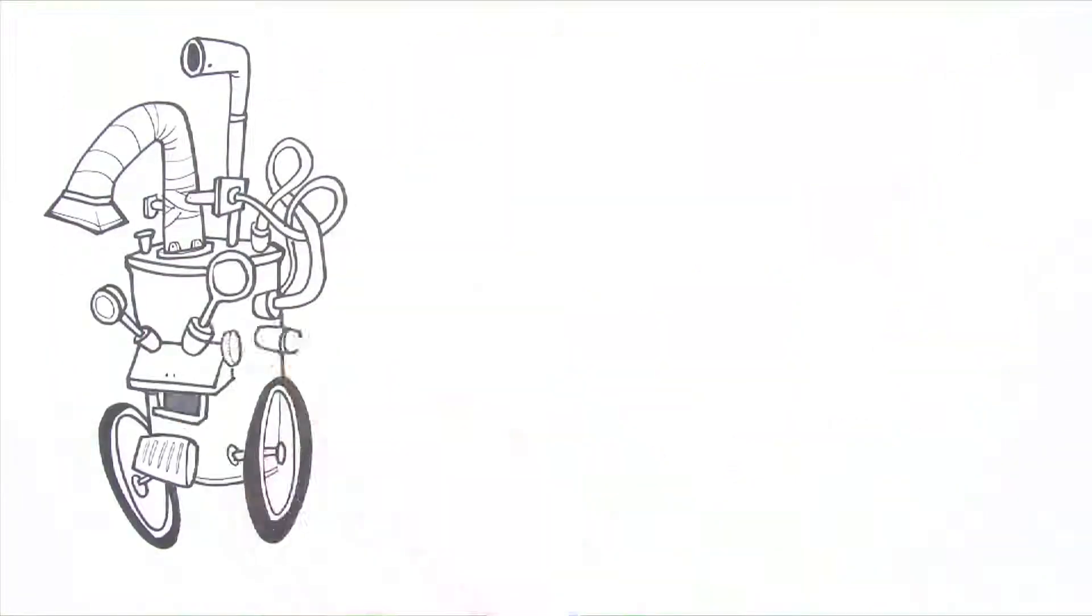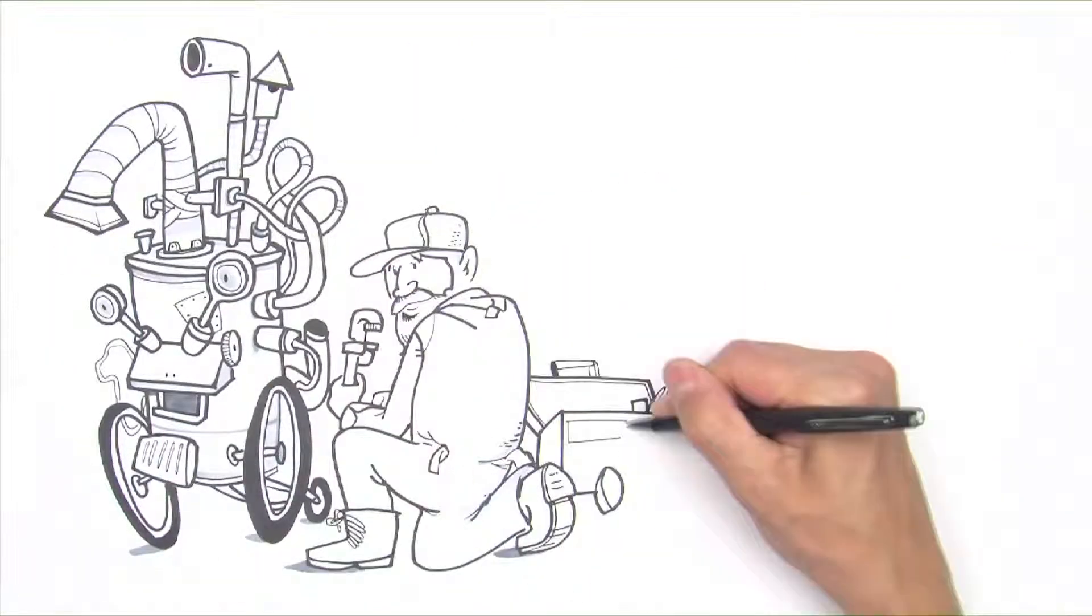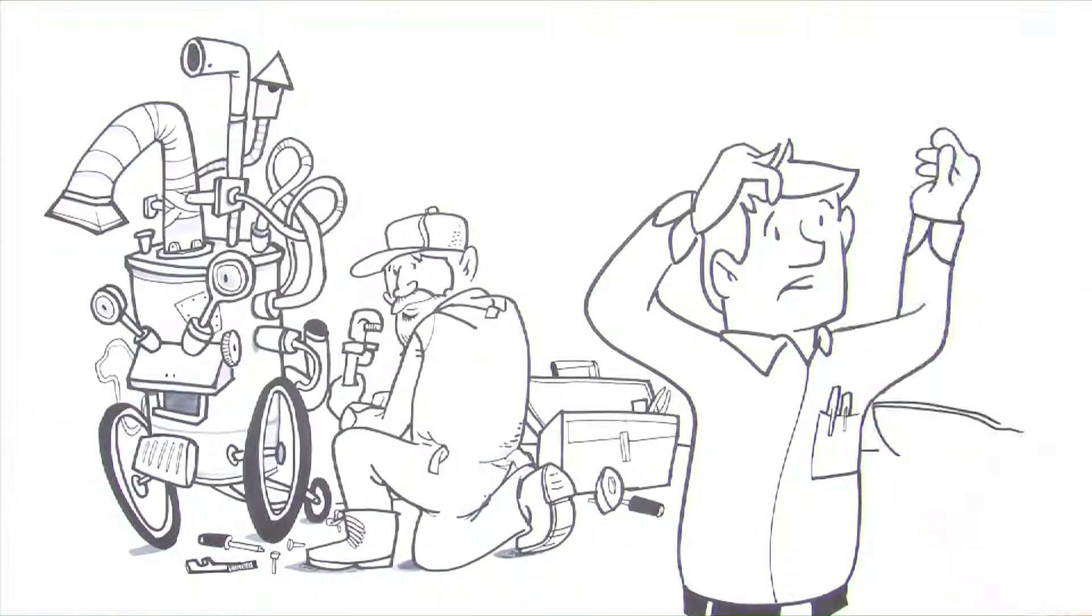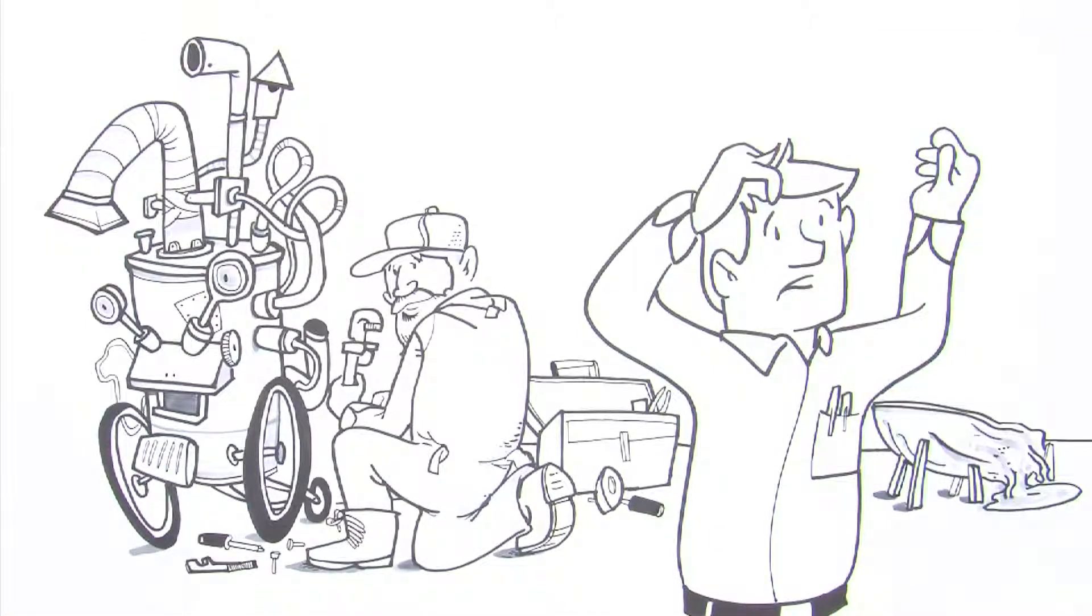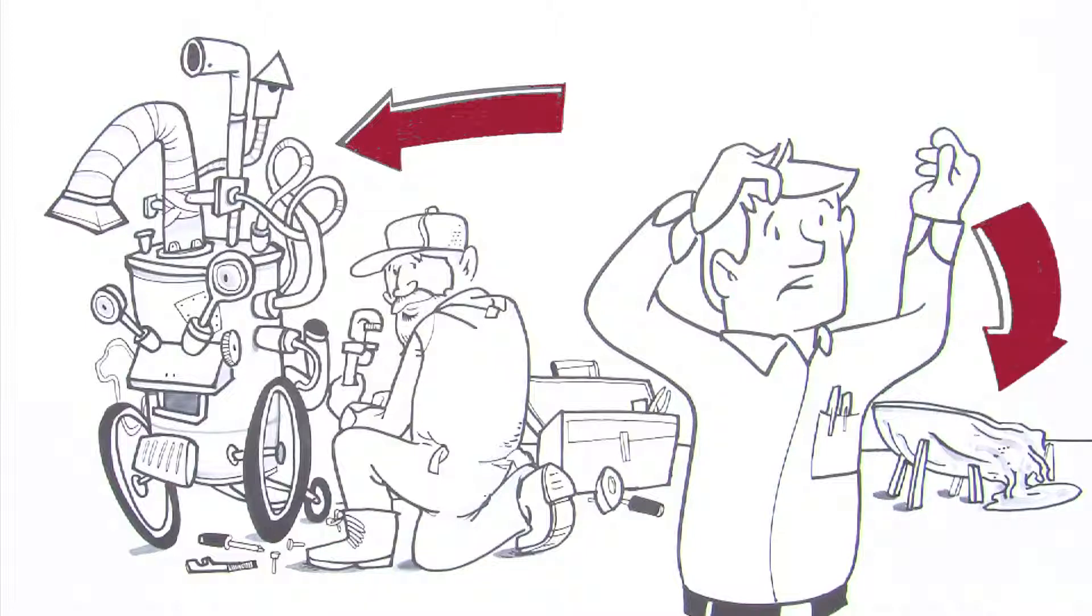But when he finally gathered up all the parts and hired the local plumber to rig the whole thing together, his vacuum infuser came out like this, and his boat hull came out like this.